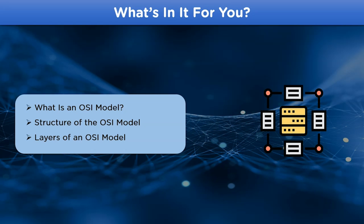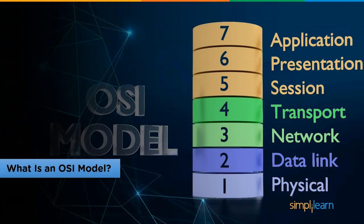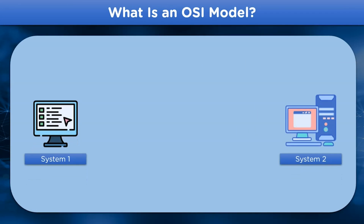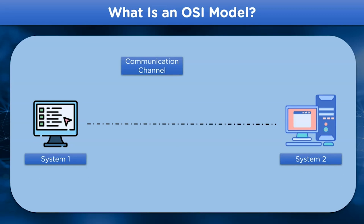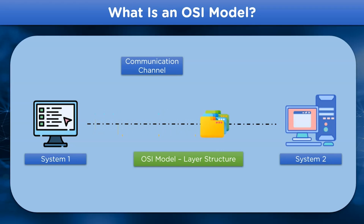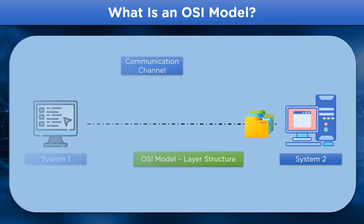To better understand the OSI model, let's take a look at a scenario. Assuming we have two different systems with different operating systems installed in them and there is a communication channel between them over which data is shared. But sometimes during transmission, data faces problems. These errors often arise due to different operating systems or due to a network problem. To overcome such situations, the OSI model structure is used, making data transmission over the communication channel error free.